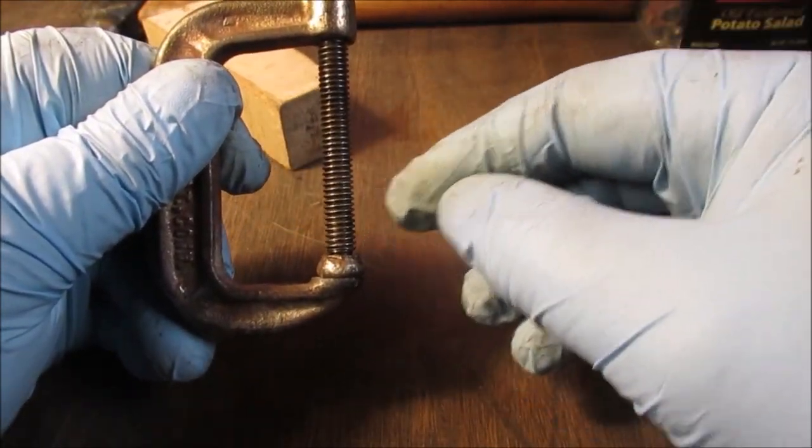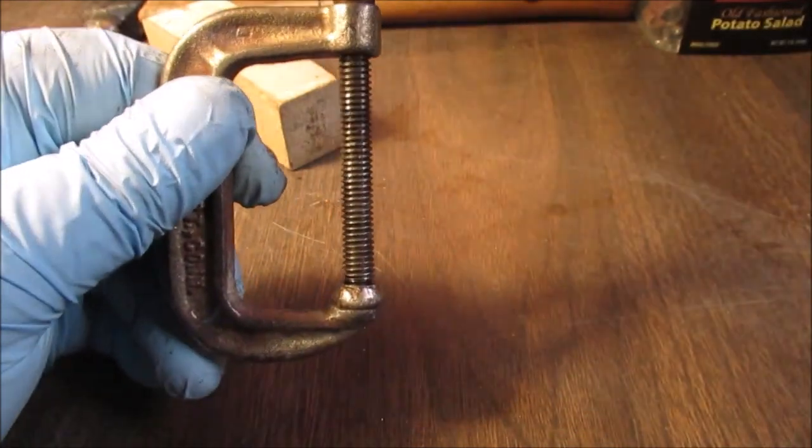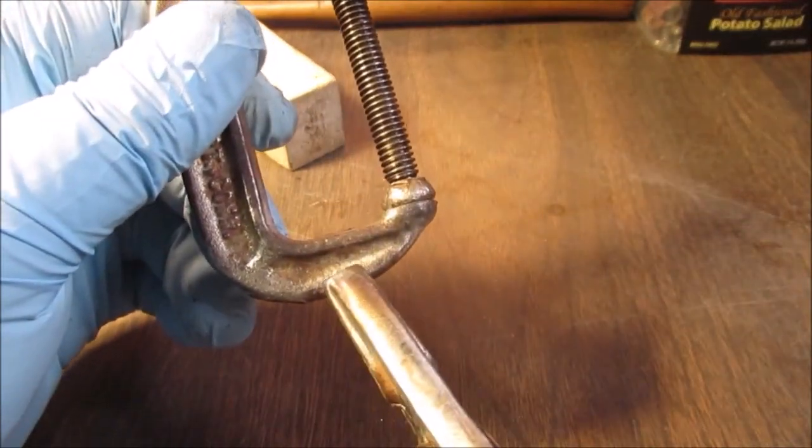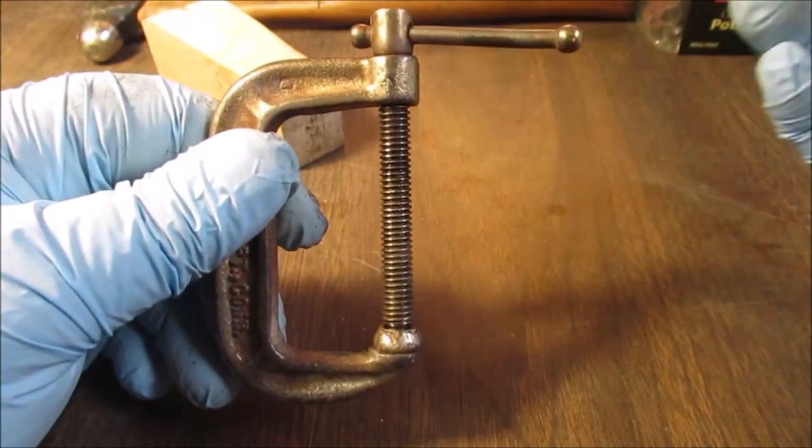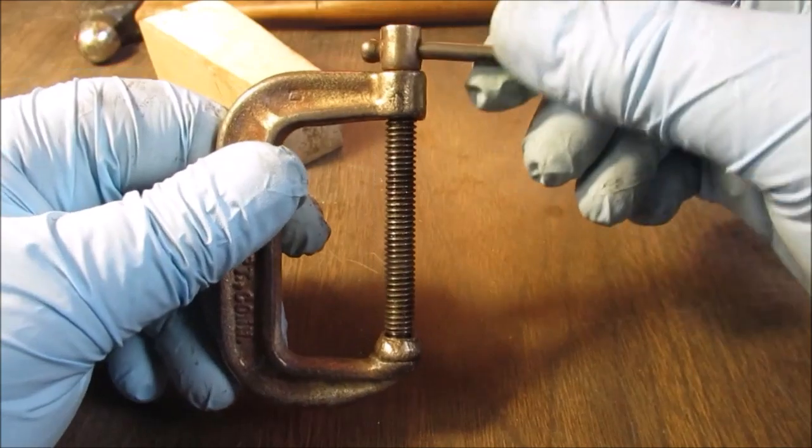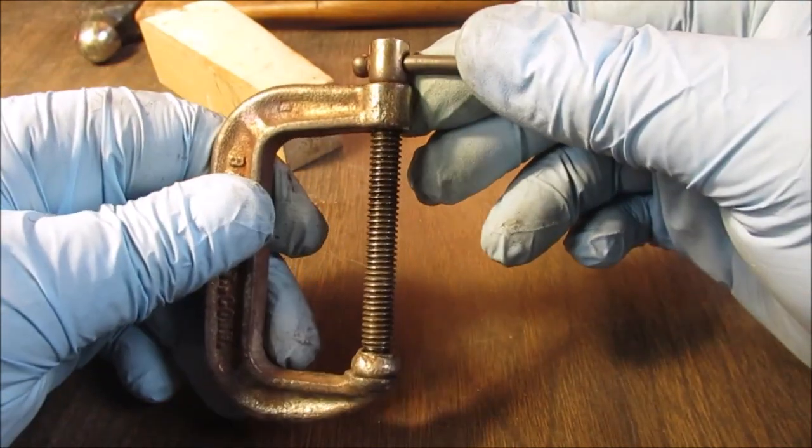And a vice grips hanging underneath here in case it went to fall, maybe I could grab it. But you don't have three hands, you only got two hands. One for the torch, one for the crank on the big vice. But it's good enough.